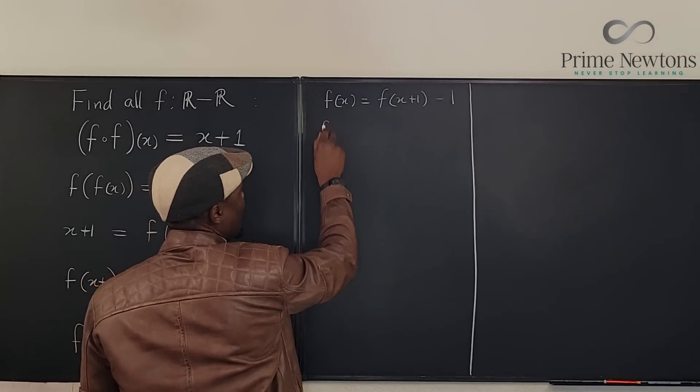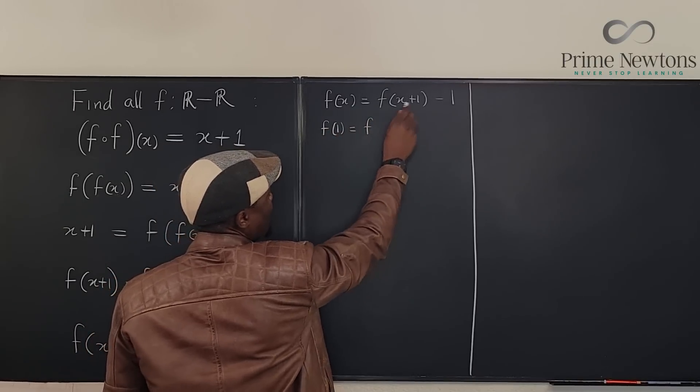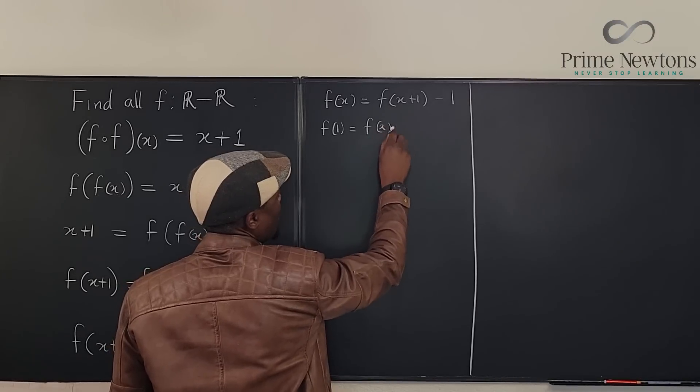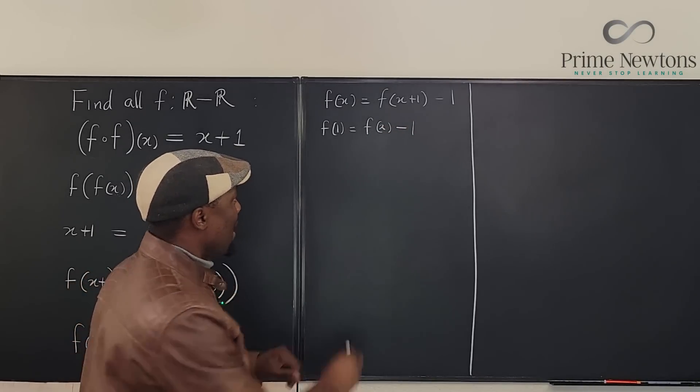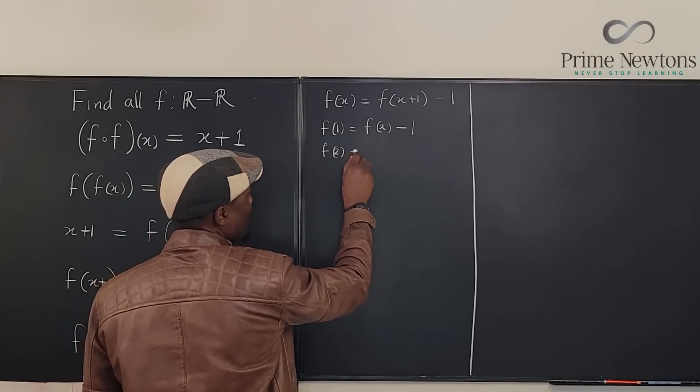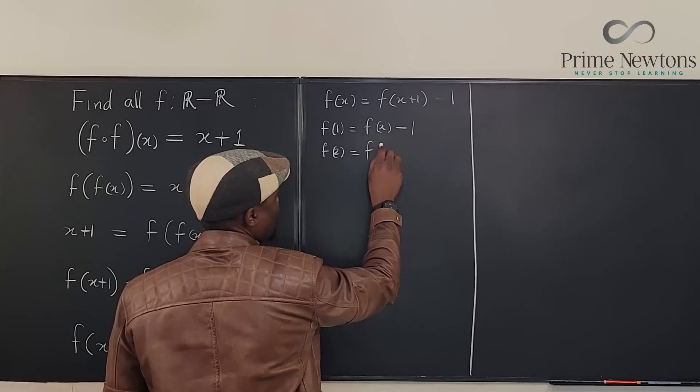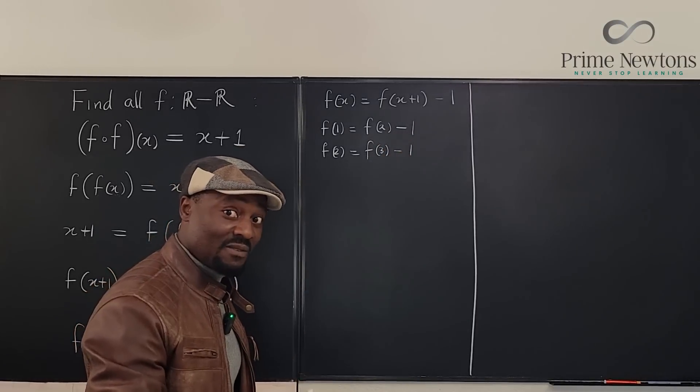Let's plug in one here. What is f of one? f of one is going to be equal to f of this is going to be two minus one. So what about f of if we if x is equal to two? What about f of two is going to be f of three minus one.